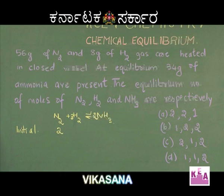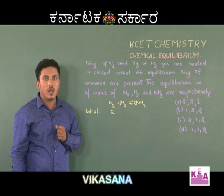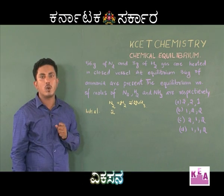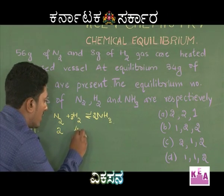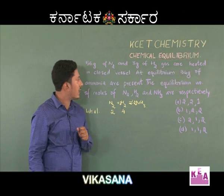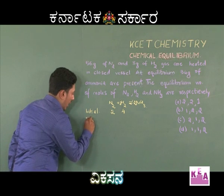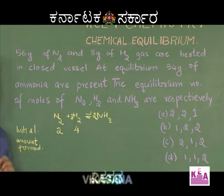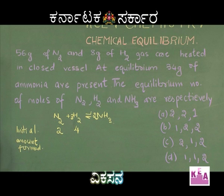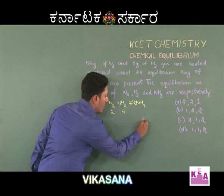The molar mass of hydrogen is 2, and 8 grams of hydrogen is given. Hence, 8 ÷ 2 = 4, so the number of moles of hydrogen initially taken is 4. The question also indicates that at equilibrium, 34 grams of ammonia are present. Since the molar mass of ammonia is 17, 34 ÷ 17 = 2. So 2 moles of ammonia is formed.